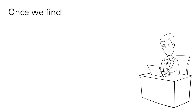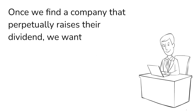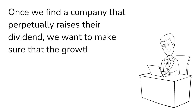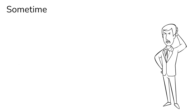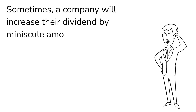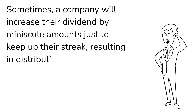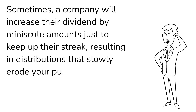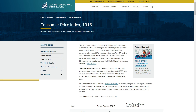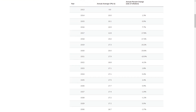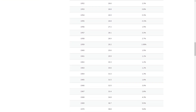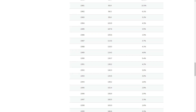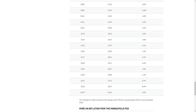Once we find a company that perpetually raises their dividend, we want to make sure that the growth is fast enough to keep our dividend income ahead of inflation. Sometimes a company will increase their dividend by minuscule amounts just to keep up their streak, resulting in distributions that slowly erode your purchasing power. Historically, inflation has grown at about a 2-3% pace. Right now that rate is much higher, somewhere in the neighborhood of 7 or 9%, but let's assume over the long term inflation will return to its historical rate.